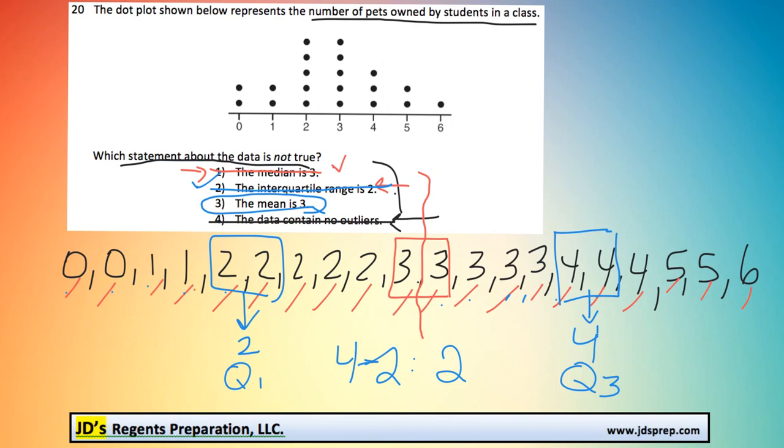And if you wanted to test it out, remember to calculate the mean of a list of data, we would add up all the numbers together and divide by how many numbers there are. And if you were to do that, the numbers add up to 55, you would divide it by 20 numbers, and the mean is actually 2.75, not 3. So option number three is the correct answer because it is not true. That's it for this video. Thanks for visiting JD's Regents Preparation.